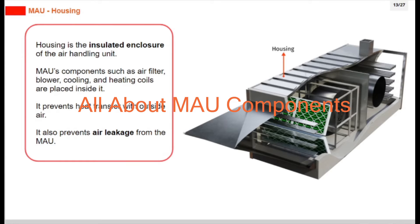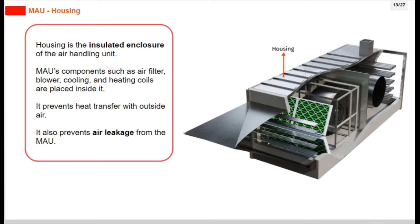Housing is the insulated enclosure of the air handling unit. MAU components such as air filter, blower, cooling, and heating coils are placed inside it. It prevents heat transfer with outside air and also prevents air leakage from the MAU.